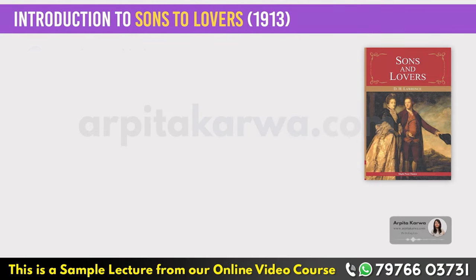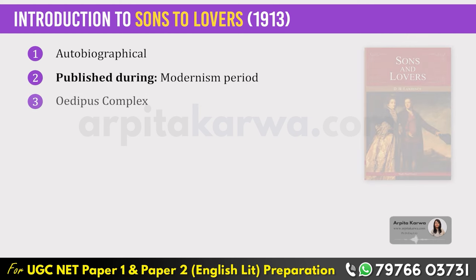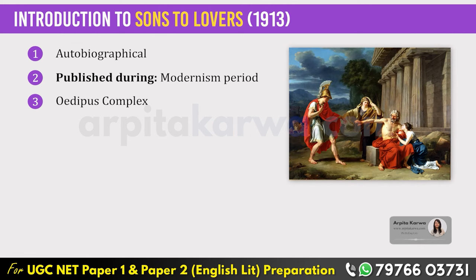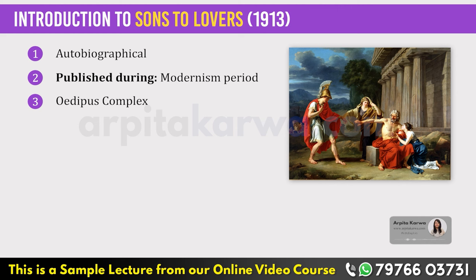This novel is an autobiographical account of the author's own life. It was published in the modernism period and it also highlights the Oedipus complex. The Oedipus complex, also called the Oedipal complex, describes a child's feeling of desire for their opposite-sex parent and jealousy and anger towards their same-sex parent. This concept was first introduced by Sigmund Freud in his theory of psychosexual stages of development.